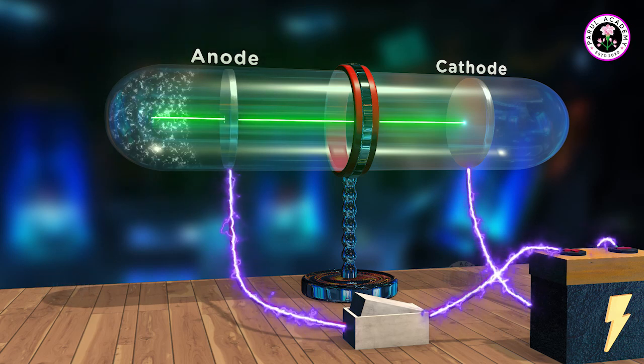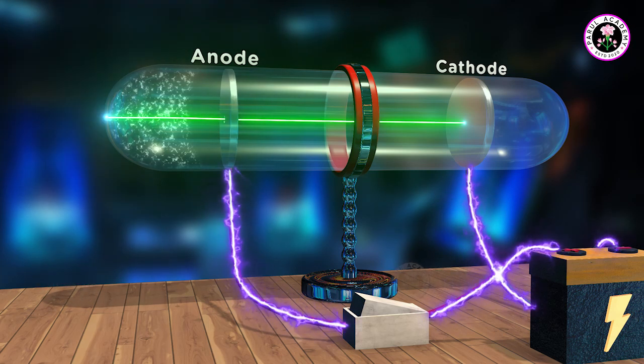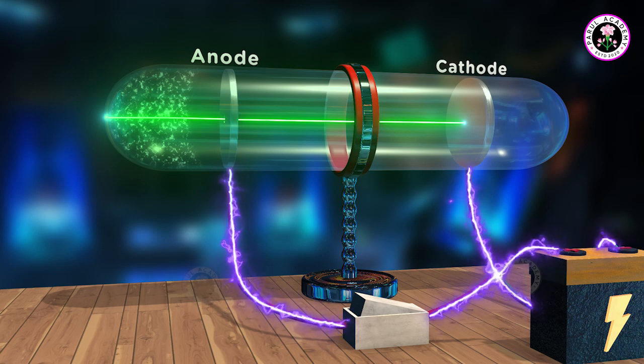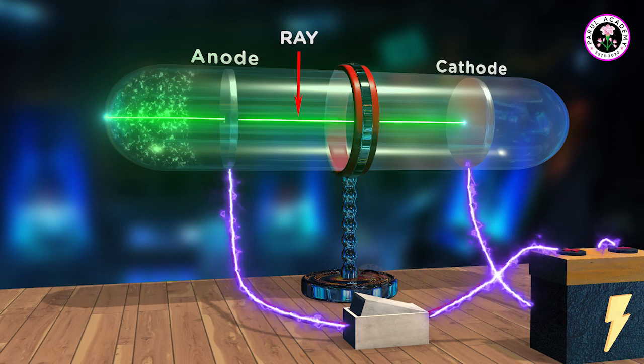We can understand this direction of flow as we see some fluorescent spots on the zinc sulphide layer behind the anode. As a huge number of charges flow from cathode to anode, so we can say it is a ray. But it is not visible.